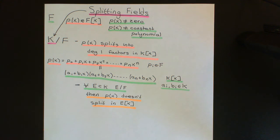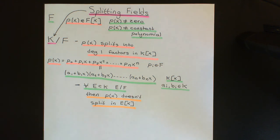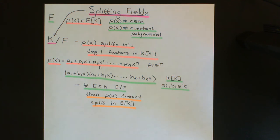We have two very important things to prove: first, existence of a splitting field, and second, uniqueness — that there is only one splitting field for a polynomial over a field capital F up to isomorphism. In the next video we will prove existence, and in the video after that we will prove uniqueness. But first, I want to go over some notation we'll use throughout.